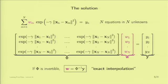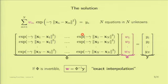You interpret the solution as exact interpolation: on the training points where you know the value, you get the value exactly. The kernel — the Gaussian in this case — interpolates between the points to give values at other X's. It's exact because you get it exactly right on those training points.